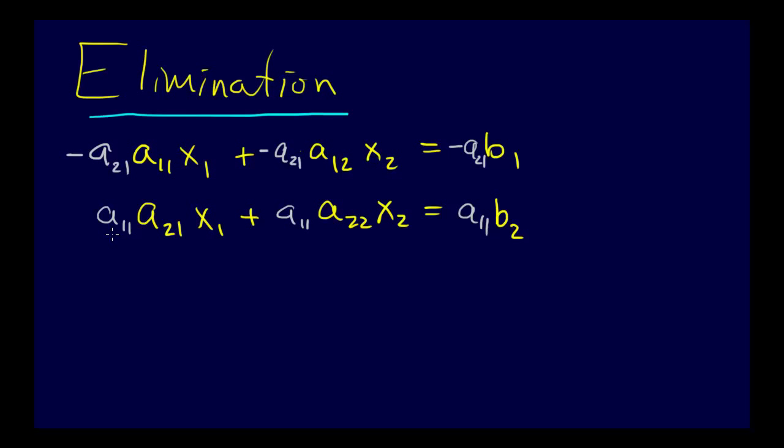Now we have this system of equations. Let's start simplifying it. If we add this together, that term drops out, and then we have the result: a11 a22 minus a21 a12, times all of that, times x2, equals a11 b2 minus a21 b1.